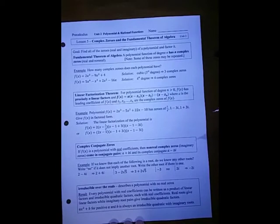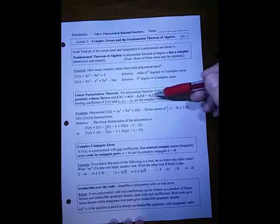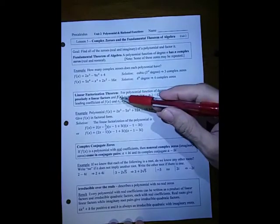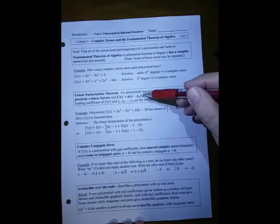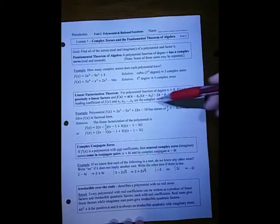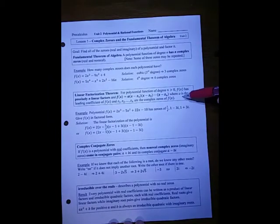The linear factorization theorem says that if you can find each one of those complex roots, they can be imaginary roots, then your function has to be able to factor into the leading coefficient times x minus c1, x minus c2, up until x minus cn. So a is the leading coefficient. You have to remember to put that out in front.